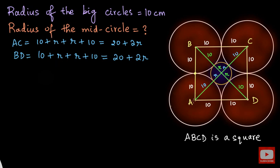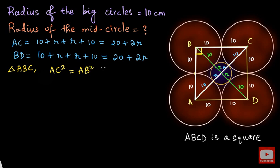Now let me focus on right-angle triangle ABC. Since ABCD is a square, this angle must be 90 degrees. We can find the length of AC using the Pythagorean theorem. Applying it to triangle ABC: AC squared equals AB squared plus BC squared. The length of BC is 10 plus 10, which is 20, and the length of AB is also 20.